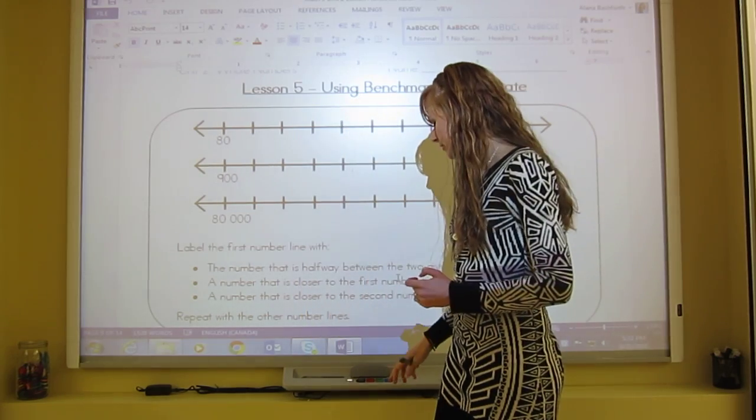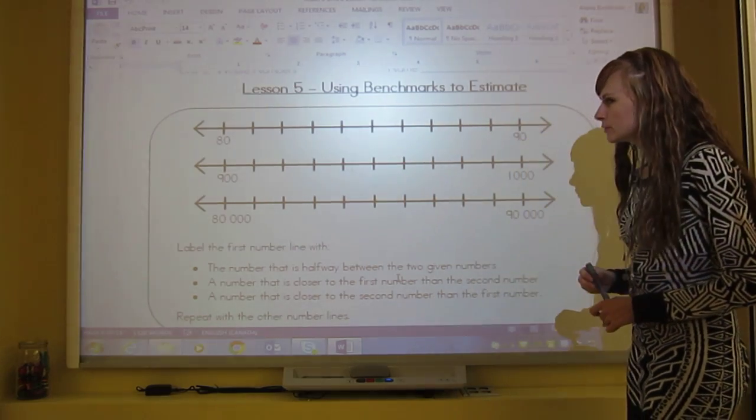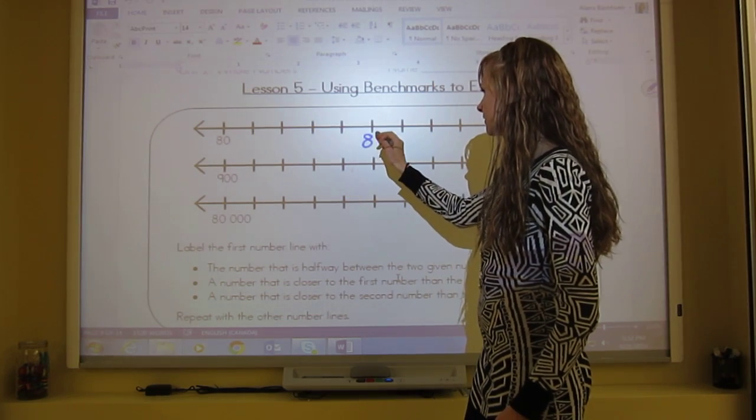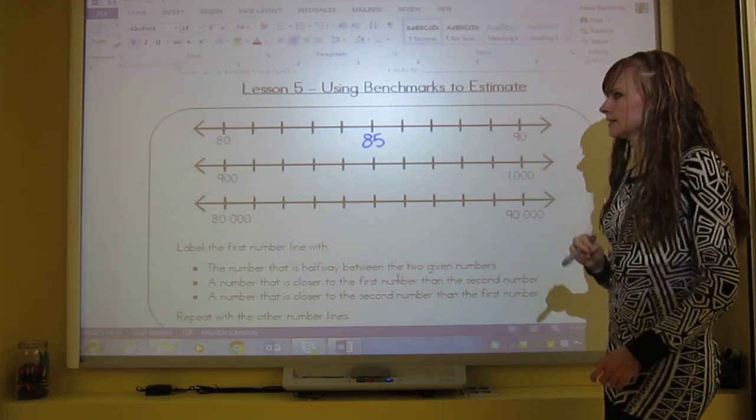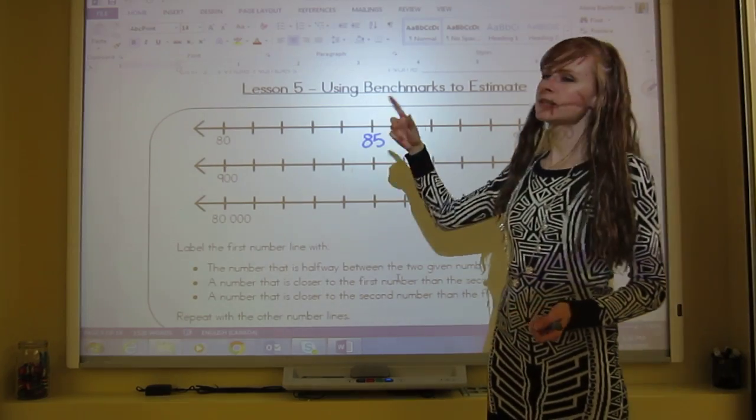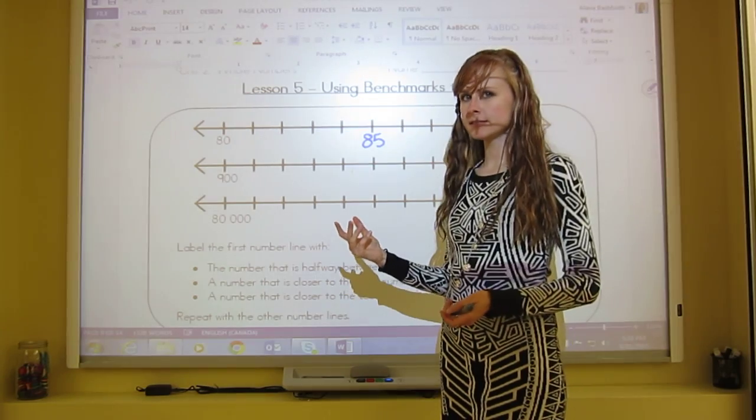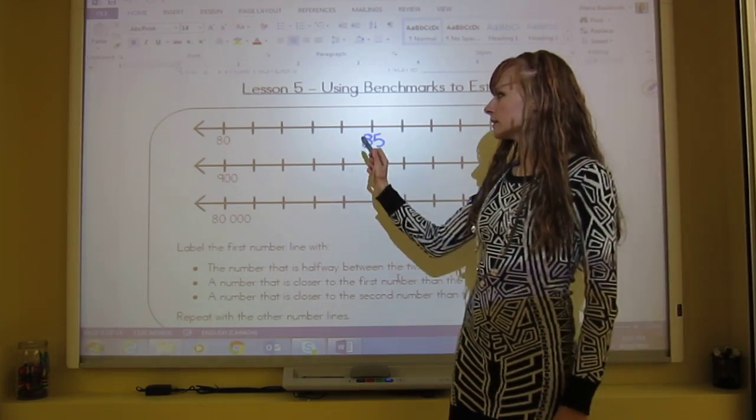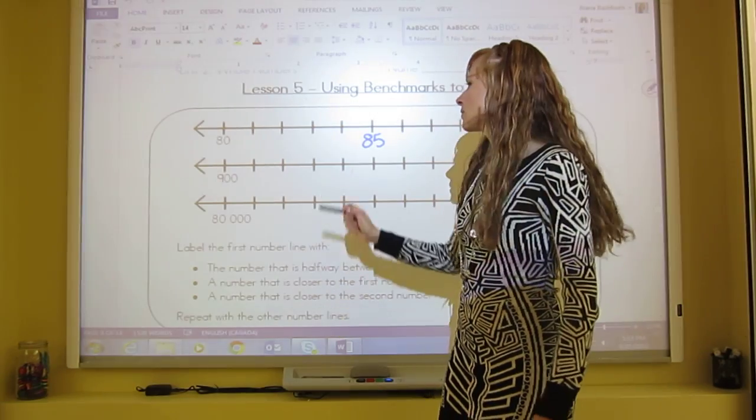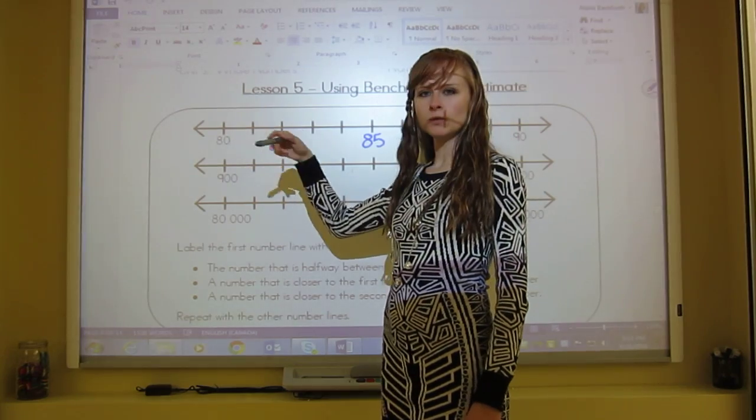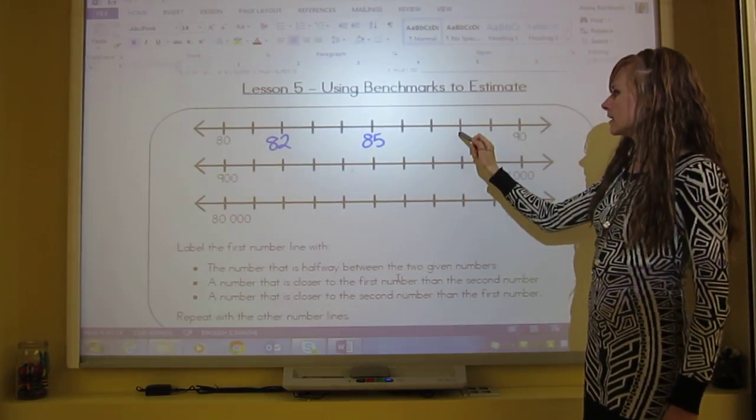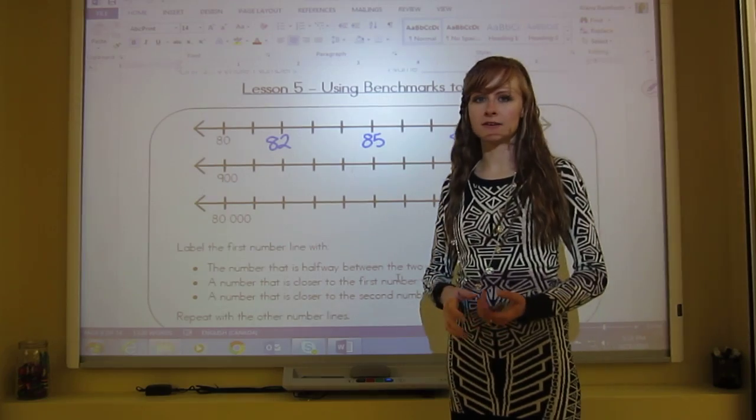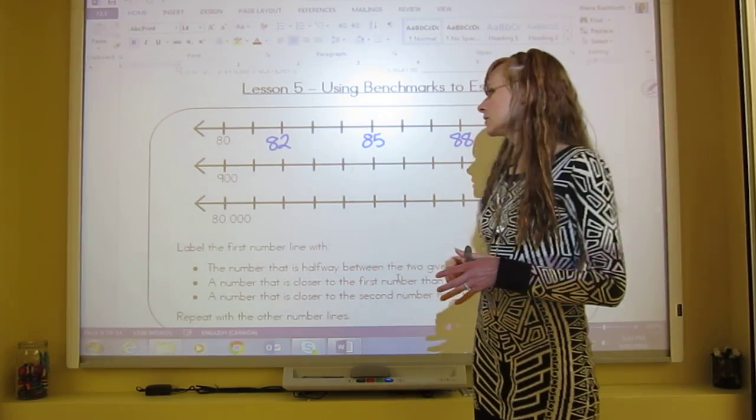Okay, so you should be finished. What's halfway between 80 and 90 is 85. So 81, 82, 83, 84, 85 should go right here, then 86, 87, 88, 89, 90. So this one each tick is worth one. The rest of them are not going to be that easy. That's halfway between. A number that's closer to the first number, literally any of these you could write down. So I'll just pick 82. You could have picked 81, 83, or 84. And then on the other side, I'll pick 88. You really could have picked any on that side just as long as it's closer to 90.